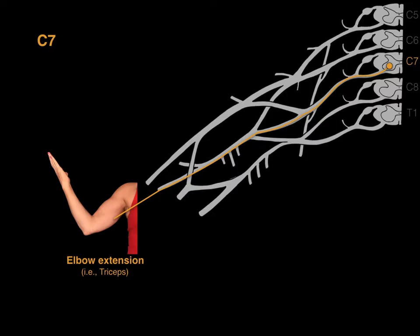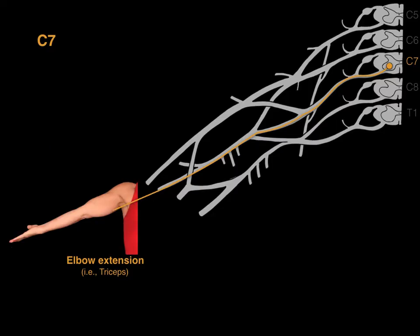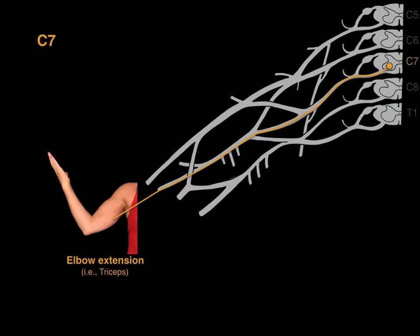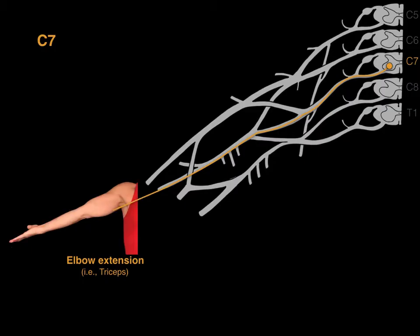The C7 myotome is elbow extension — that's the triceps. The radial nerve is what transports C7 motor neurons.